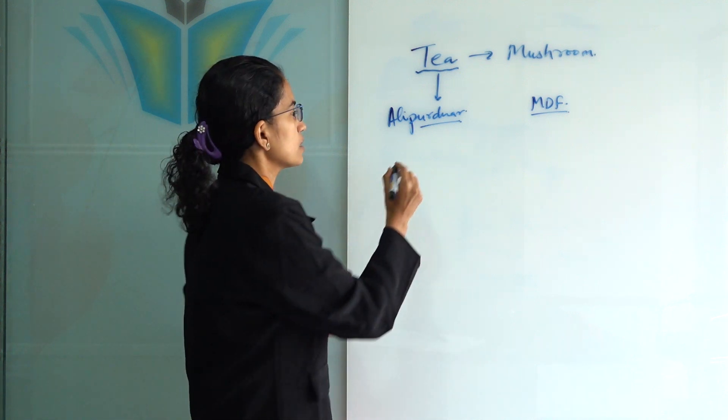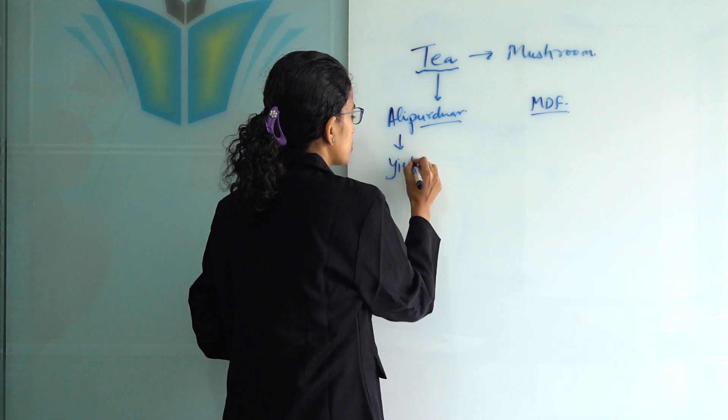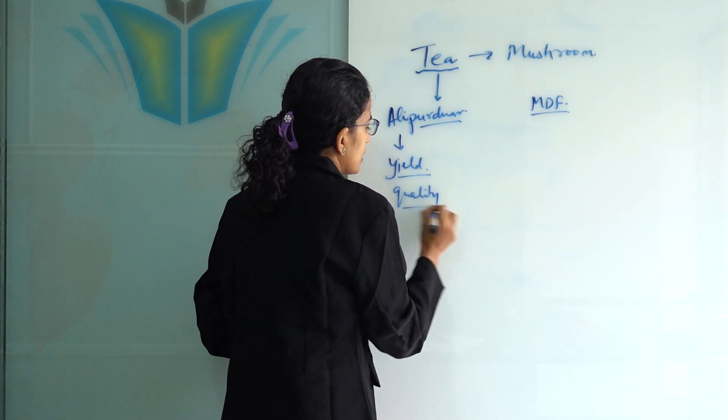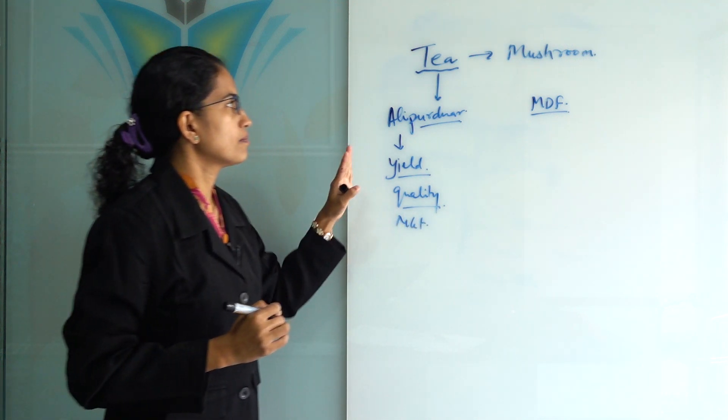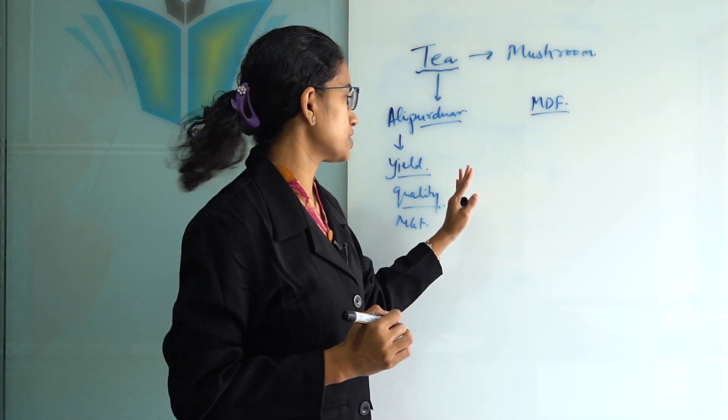Tea plantation predominantly faced issues with yield - the yield was low, the quality was poor, and the market value was not adequate. As a result, people were not getting proper reimbursement for the cultivation that was done, so they planned to shift towards mushroom cultivation.